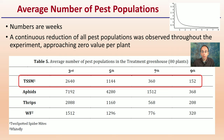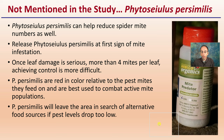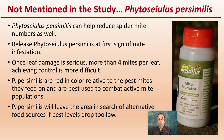Not mentioned in the study was Phytoseiulus persimilis. These do a little better when there is webbing involved, making them more of a benefit if your spider mites have developed protective webbing. Release at the first sign of mite infestation is advised — once leaf damage is serious (more than four mites per leaf), achieving control is more difficult. Persimilis are red in color relative to pest mites and feed on active mite populations, but they will leave the area in search of alternative food sources if pest populations drop to a lower level.